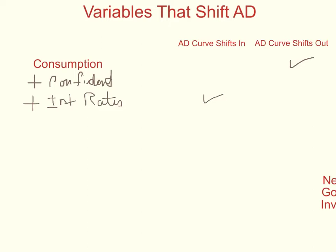A third example of consumption might be taxes. If we're taxed more, that means we have less money to spend. And so with a higher tax rate, we are going to see less consumption. That's going to shift in the aggregate demand curve. So here are three examples of consumption and how they might impact the movement of the aggregate demand curve.